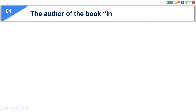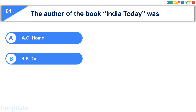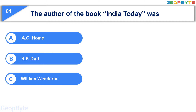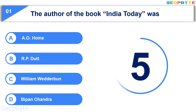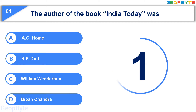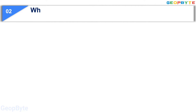Moving to the first question: the author of the book 'India Today' was — Option A: A.O. Hume, Option B: R.P. Dutt, Option C: William Wedderburn, Option D: Bipan Chandra. Your time starts now. Your time is up and the correct answer is Option B: R.P. Dutt.